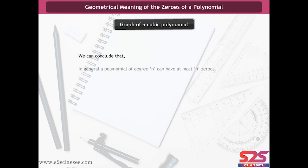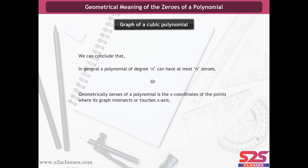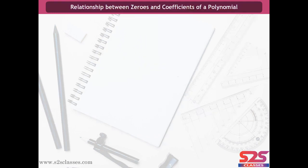From the examples discussed above, we can conclude that in general, a polynomial of degree n can have at most n zeros. Or we can say, geometrically, the zeros of a polynomial are the x-coordinates of the points where its graph intersects or touches the x-axis.